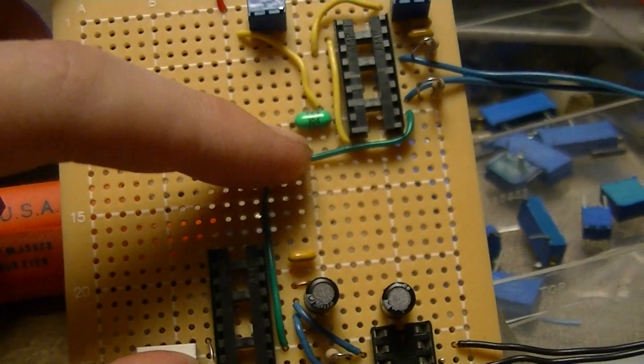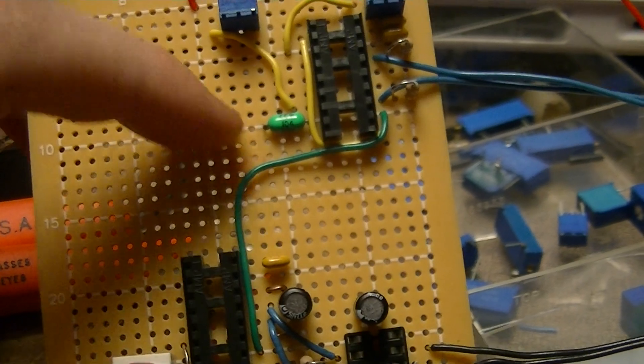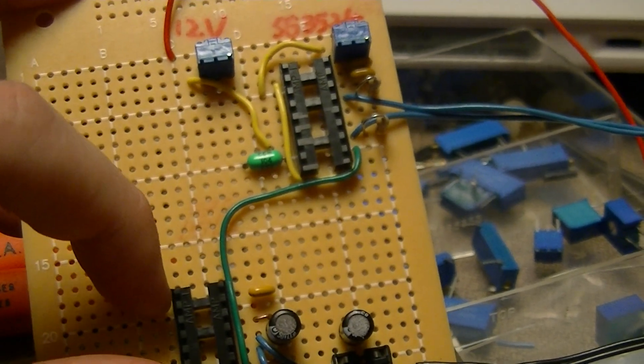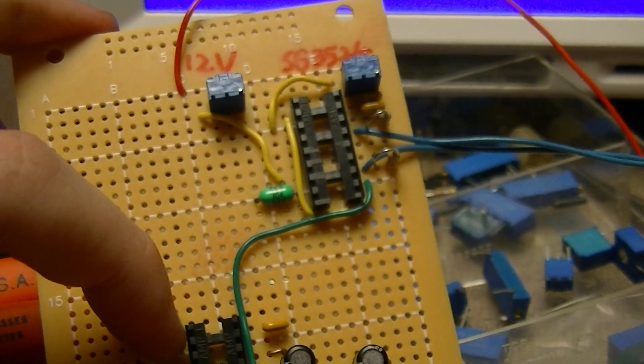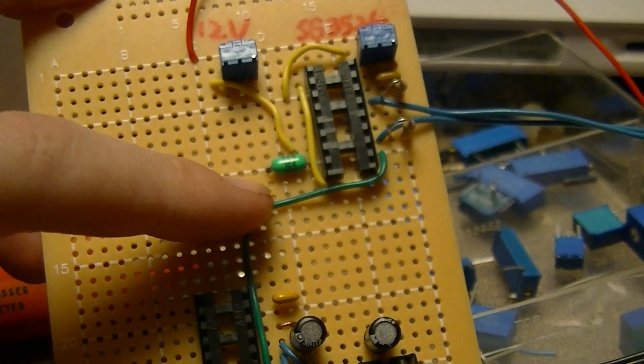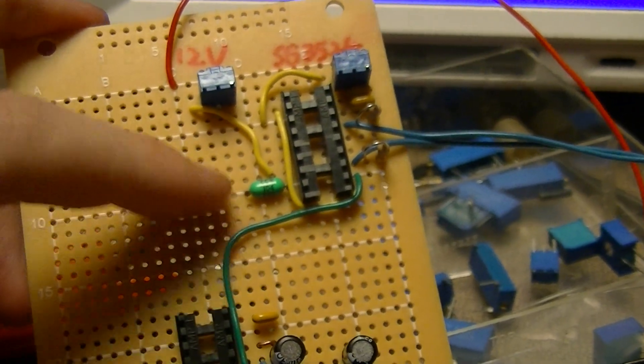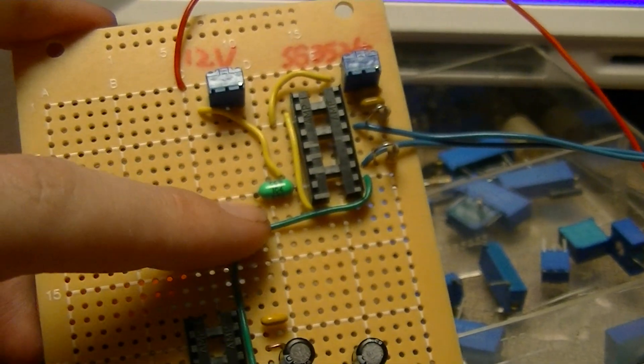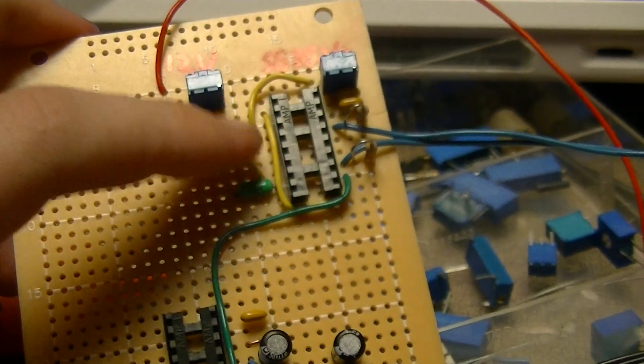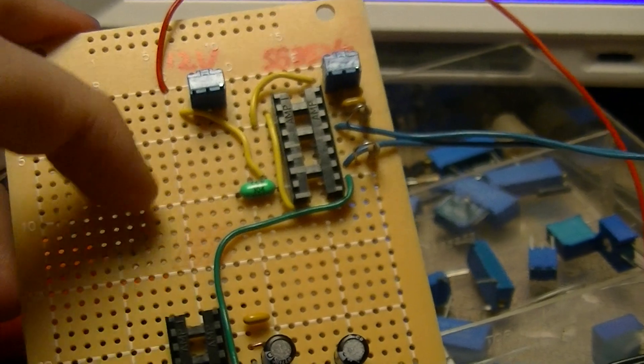I'm going to have a current fold back because the SG3524 is capable of over current shutdown. It's got a current sense input, and if it detects a 200mV potential difference between the differential inputs on the current sensing amplifier, it can reduce the duty cycle.